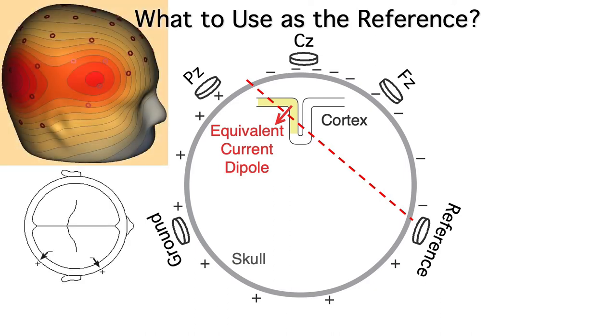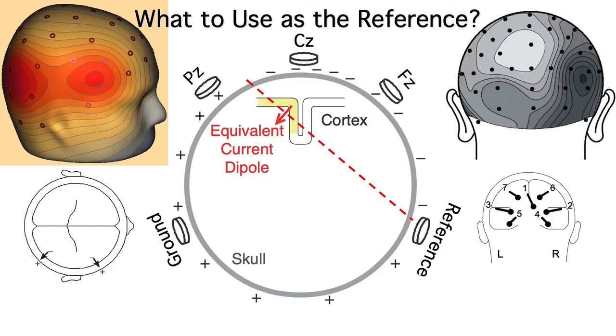If we have two dipoles, there's no single zero line, and we usually have at least a dozen dipoles. So in practice, there's just no way to find an electrically neutral location for the reference electrode.